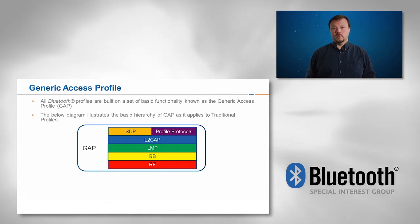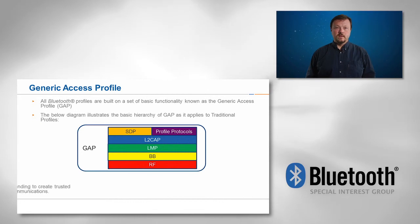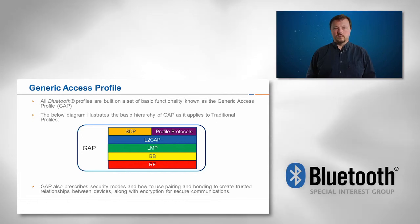The link manager protocol or LMP provides low-level link management functionality. The baseband and RF layers provide the MAC and PHY for the BREDR radio. GAP also prescribes security modes and how to use pairing and bonding to create trusted relationships between devices, along with encryption for secure communications.